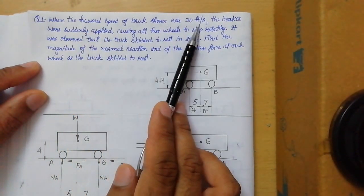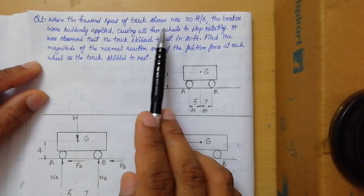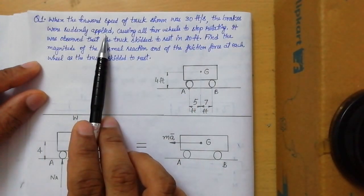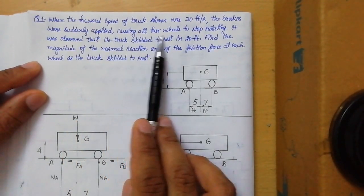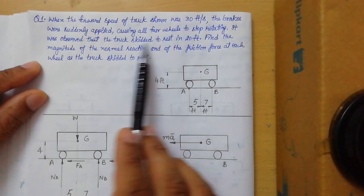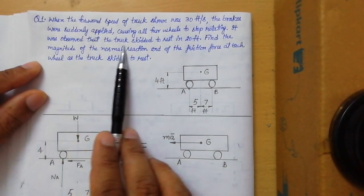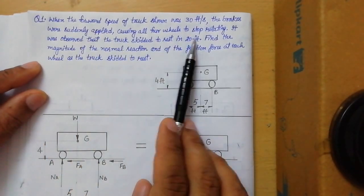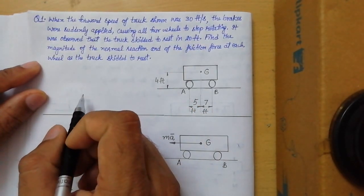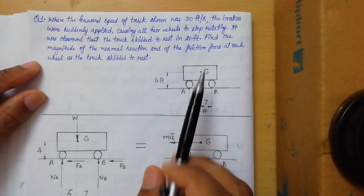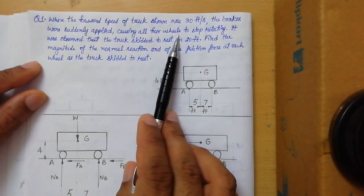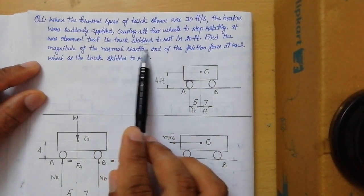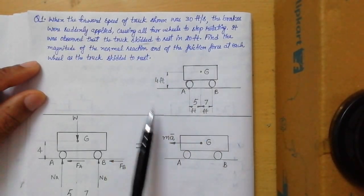When the speed of the truck was 30 feet per second, the brakes were suddenly applied, causing all four wheels to stop rotating. The truck then skidded to rest. From this statement, we learn that the motion is translational — the brakes caused all four wheels to stop rotating and the truck skidded to rest.